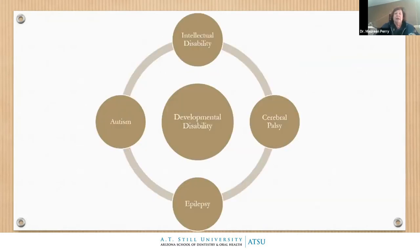Dental care is the most prevalent unmet health care need for all children with special health care needs, and that goes for adults as well. When we think about developmental disability, anybody can have one — it has to happen before you turn 21. The big four developmental disabilities are intellectual disability, autism, epilepsy, and cerebral palsy. You may have CP along with one or more of the other developmental disabilities.